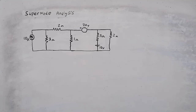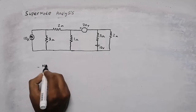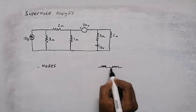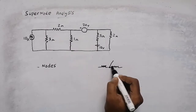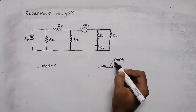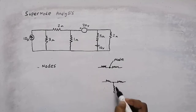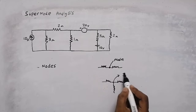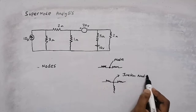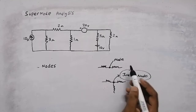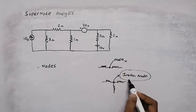In this video, we are going to discuss supernode analysis. In node analysis or supernode analysis, the first step is to identify the number of nodes. When two elements are connected, that point is called a node — this is a simple node. If more than two elements are connected, that point is called a junction node. In node analysis, we will use junction nodes, not simple nodes.